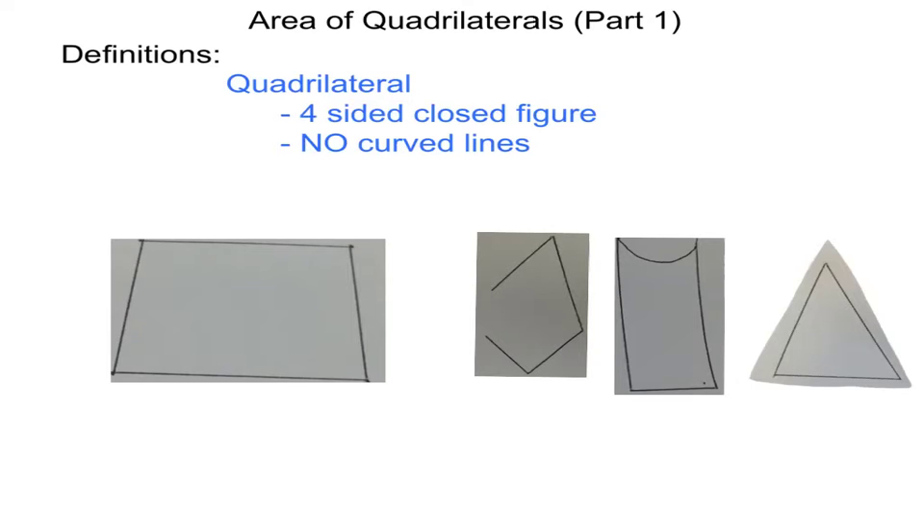In our first non-example of a quadrilateral, we have four sides, however, it is not a closed figure, so that's not a quadrilateral.